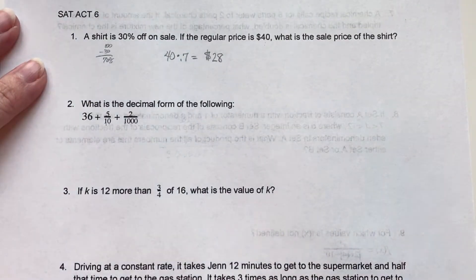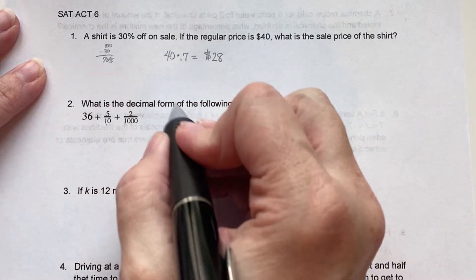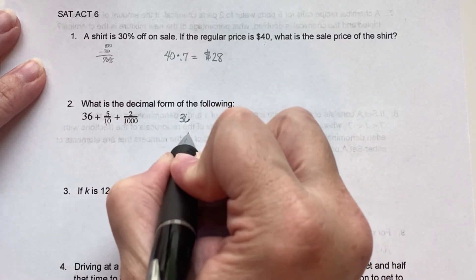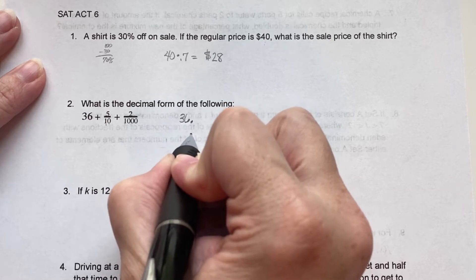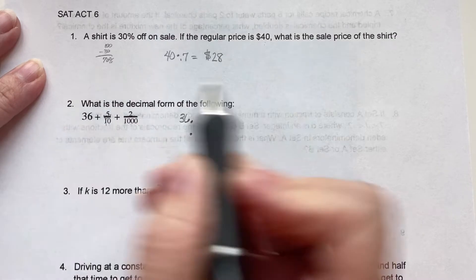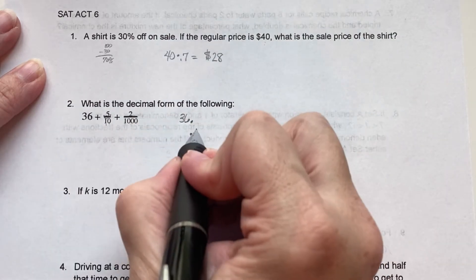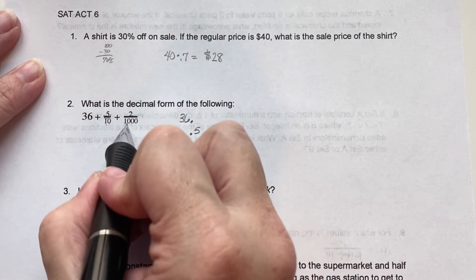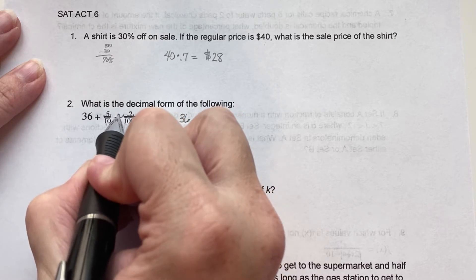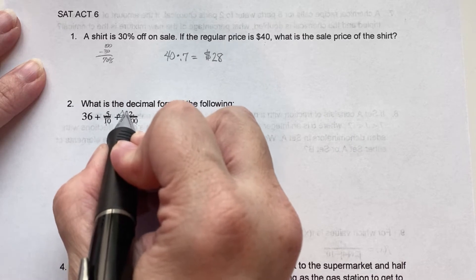Alright, what is the decimal form of the following? So I'm going to treat this one as if you can't have a calculator on this section. So we're going to have 36 plus and we'll put the decimal there. We're going to move this decimal one place to the left because there's one zero, so 0.5. This one has three zeros, so we're going to move it 1, 2, 3. Fill in the zeros.